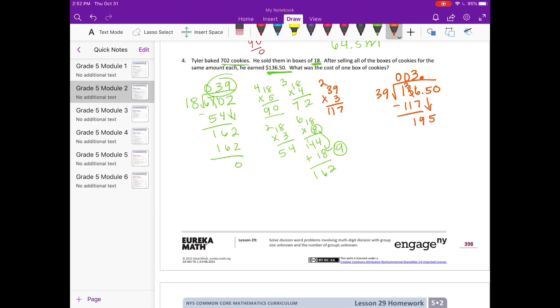Bring down the 5. 39 could go into 195. I'm going to estimate 5 times. Yeah, 5 times. Bring down the 0 and 39 can't go into 0. So I'm going to put a 0 up there. We have no remainder. So he made $3.50 per box of cookies.